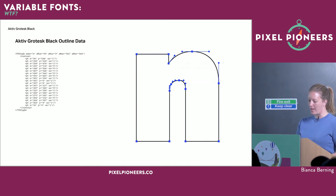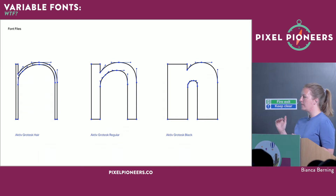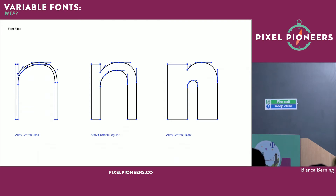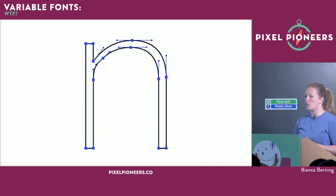If you compare the outlines of the lowercase 'n' in hairline, regular, and black visually, you'll see they actually have the same number of outline points, connected in the same way. This stem, this shoulder — point here, point here, a curve defined by handles — it repeats the same structure within a font family. That is what the working group thought was a good idea to simplify in how we serve fonts.